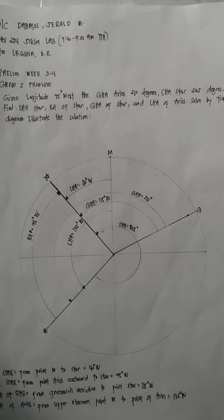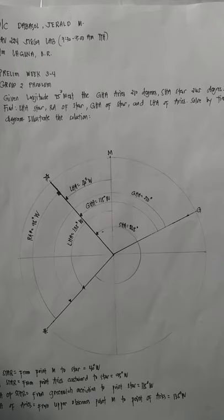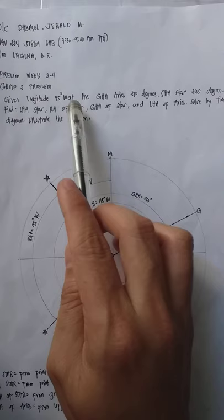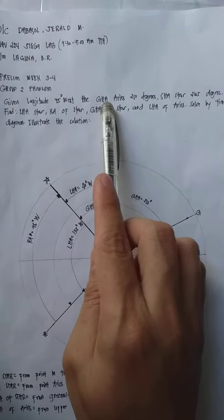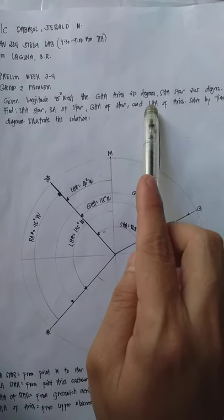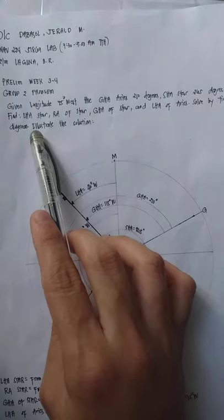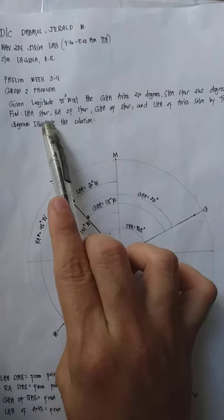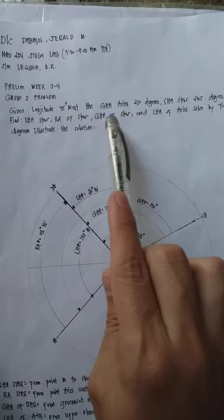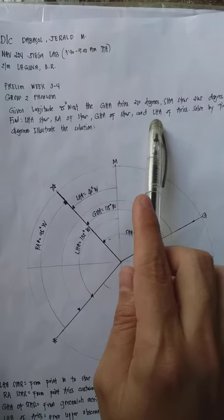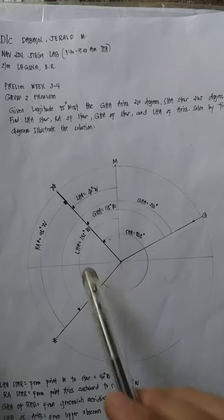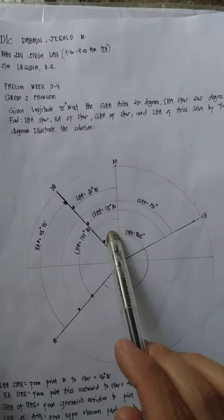I am the cadet presenting my plotted time diagram for Group 2 problem. The given values are: longitude 75° West, Greenwich Hour Angle (GHA) of Aries is 210°, and the Sidereal Hour Angle (SHA) of the star is 265°. The problem is to find the LHA of the star, the Right Ascension of the star, the GHA of the star, and the LHA of Aries.